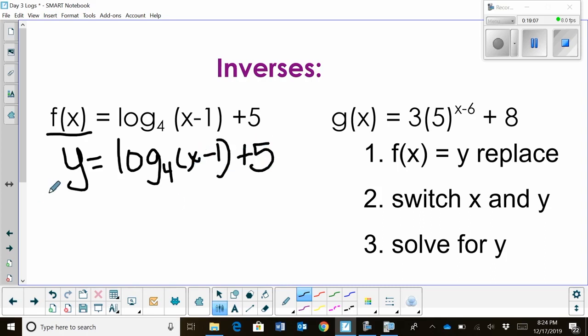Now I'm going to switch the positions of x and y. So I'm going to put an x where the y is, and write the whole thing out. And then I'm going to put a y where the x is. So this creates the inverse right there with the switch.